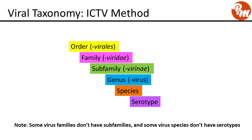Starting with order — normally the order of a virus will end in the suffix 'viralis.' Next will come family, which will end in the suffix 'viridae,' and then subfamily, 'virinae,' then genus, 'virus,' and then species will have the species name. You may also sometimes have serotypes.